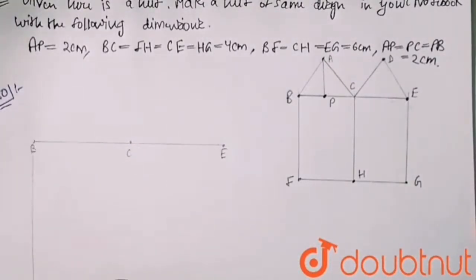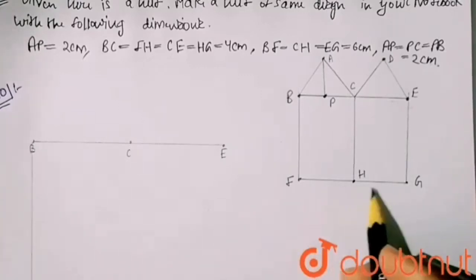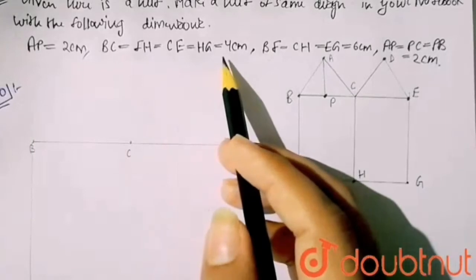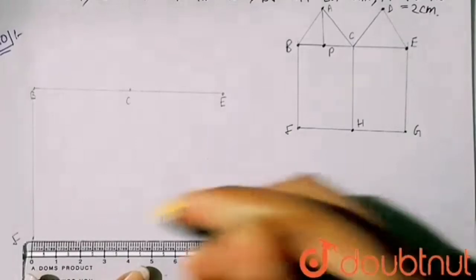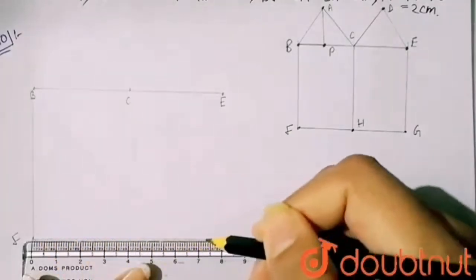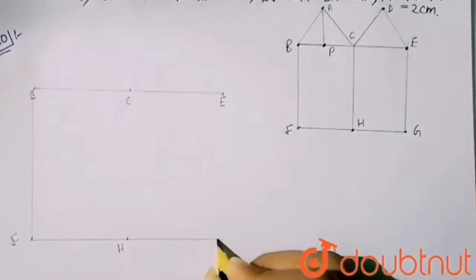Now FH and HG - both are 4 cm, so here I will draw an 8 cm line. So this is my H and this point is my G point.